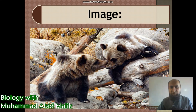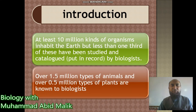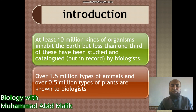We can observe two bears — two organisms of the same species here. Moving to the introduction: at least 10 million kinds of organisms inhabit the earth, but less than one third of these have been studied and catalogued by biologists. Over 1.5 million types of animals and over 0.5 million types of plants are known to biologists, while about 6 to 7 million species are still unknown.